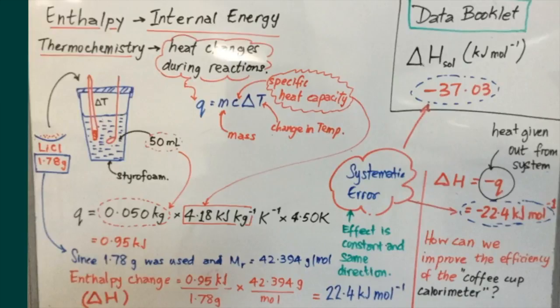The heat changes or the enthalpy changes in the system can be found by multiplying the mass of the water in the cup, 50 milliliters, which has a mass of 50 grams, which is 0.050 kilograms. The specific heat capacity of water given here is 4.18 kilojoules per kilogram per kelvin multiplied by the change in temperature given in kelvin to match the kelvin unit here in the specific heat capacity. Here we see the change was 4.5 Kelvin.